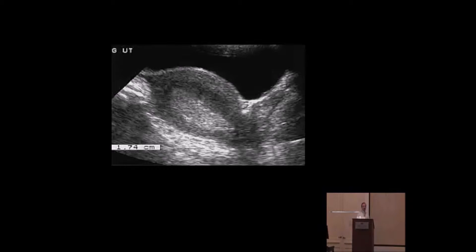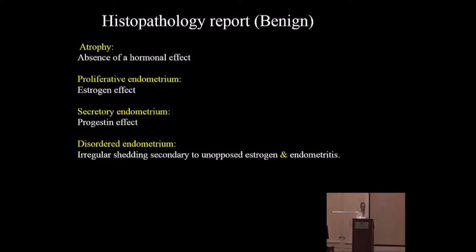In postmenopausal patients, the endometrial stripe should not exceed 5 millimeters; any thickening requires investigation. Regarding pathology report terminology: atrophic endometrium is typically seen after menopause and may cause postmenopausal bleeding. Proliferative and disordered endometrium reflect estrogen effect — exactly what we expect in dysfunctional bleeding due to persistent estrogen without progesterone to reverse the thickening. Secretory endometrium is seen in patients who have taken progesterone agents.